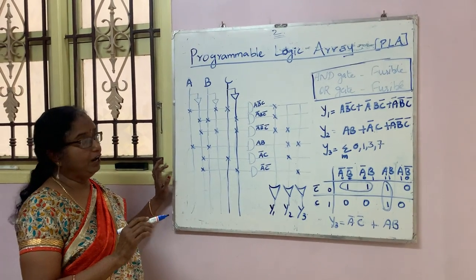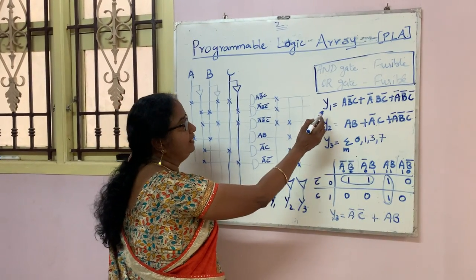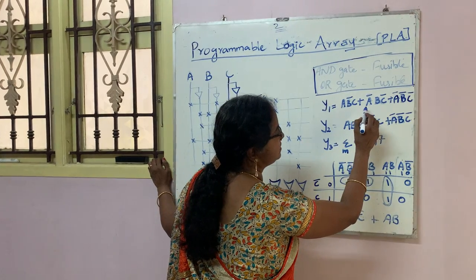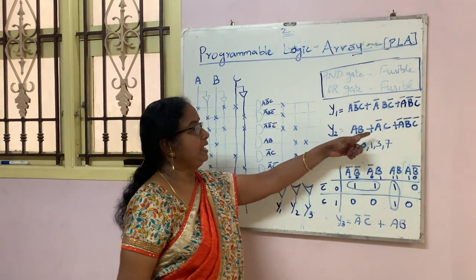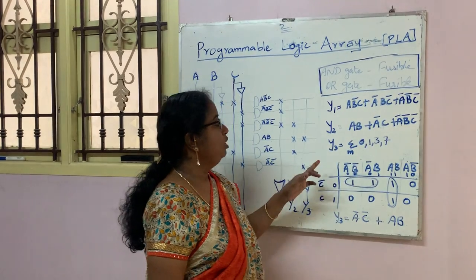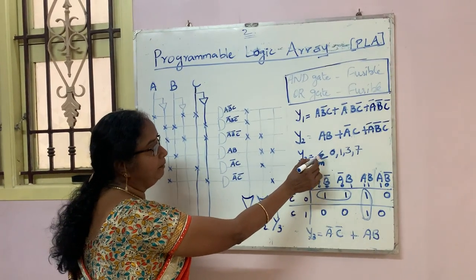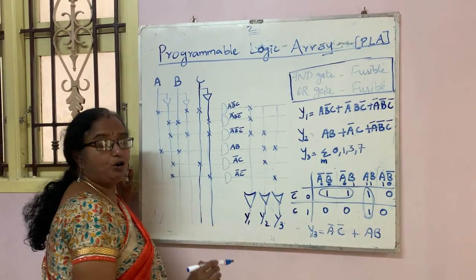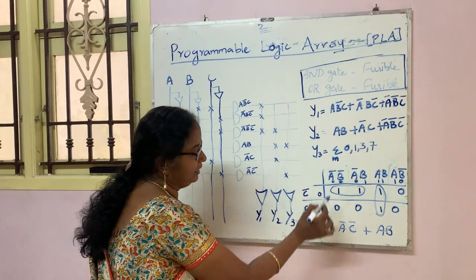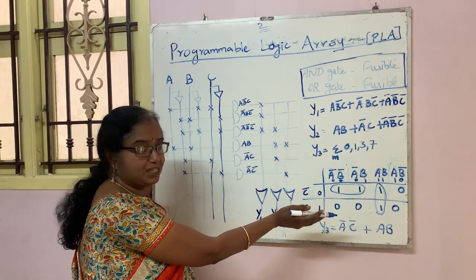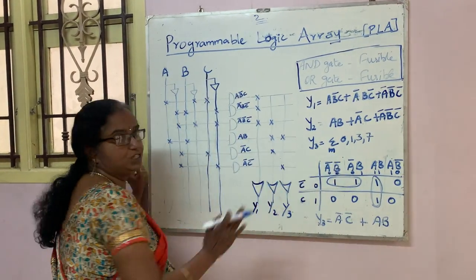Now we are going to design a PLA for these three equations. Y1 is equal to AB̄C plus ĀB̄C̄. Y2 is equal to AB plus ĀC̄ plus ĀB̄C̄. Y3 is given in terms of minterms: sigma(0, 1, 3, 7). Using Karnaugh map techniques to reduce Y3, we get Y3 is equal to ĀC̄ plus AB.